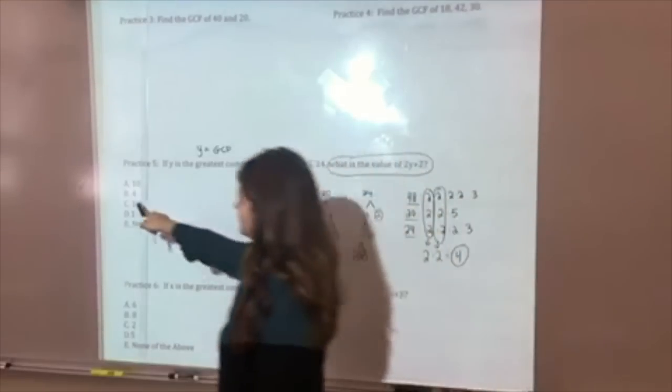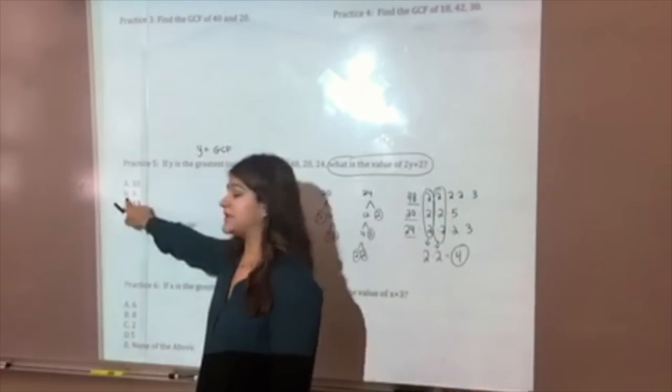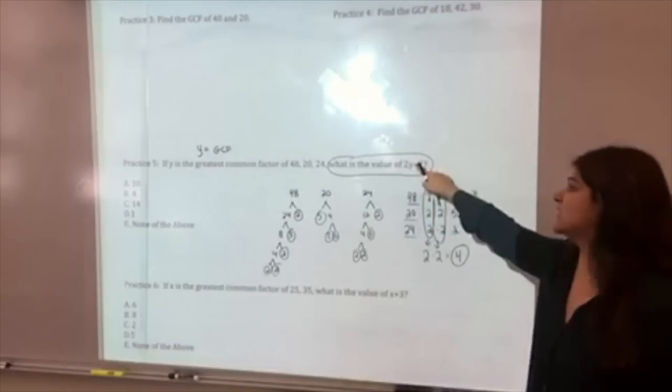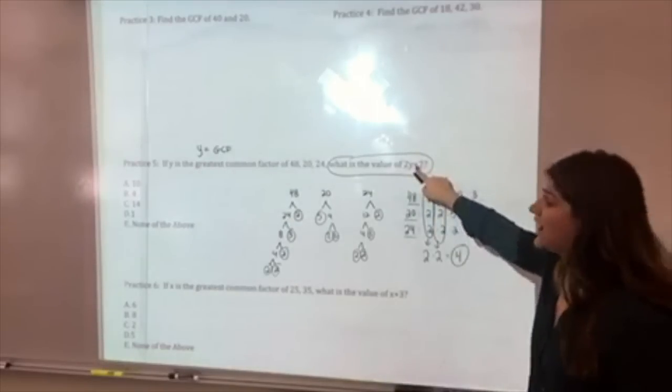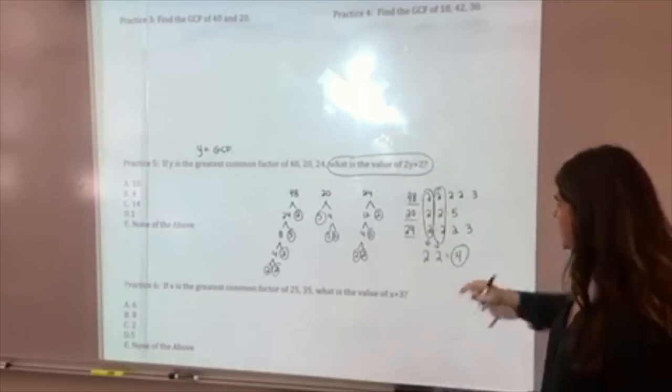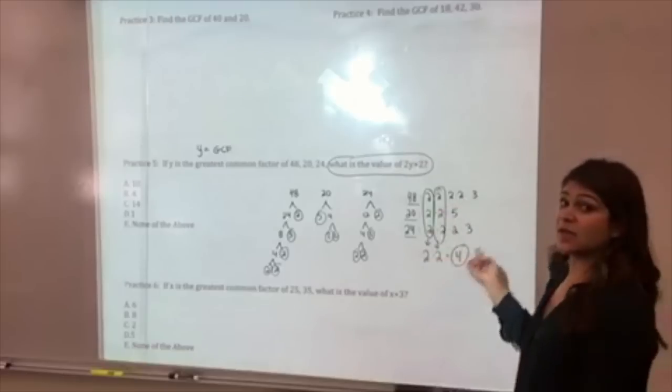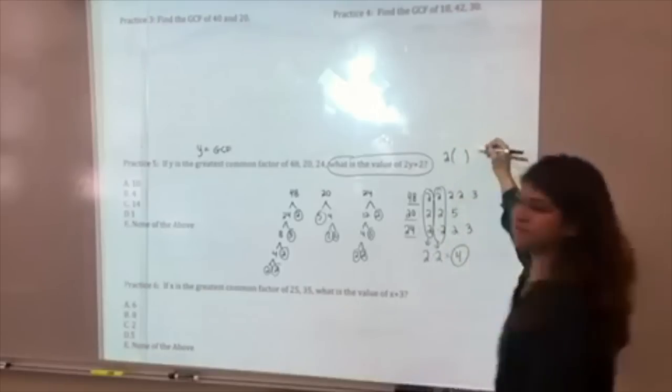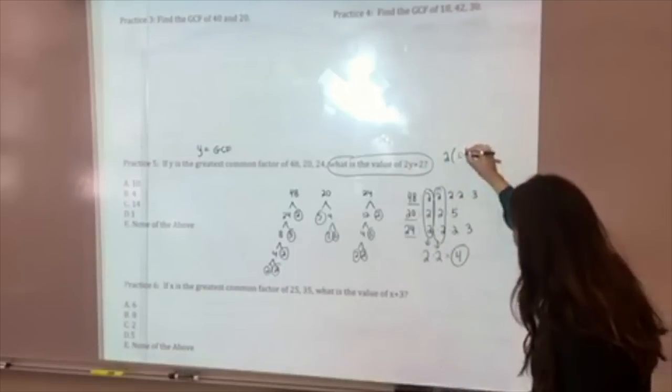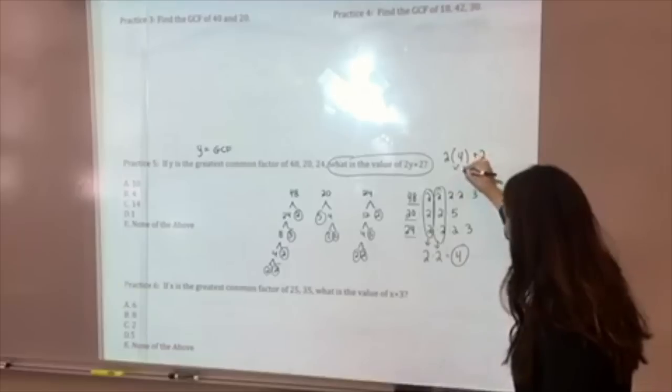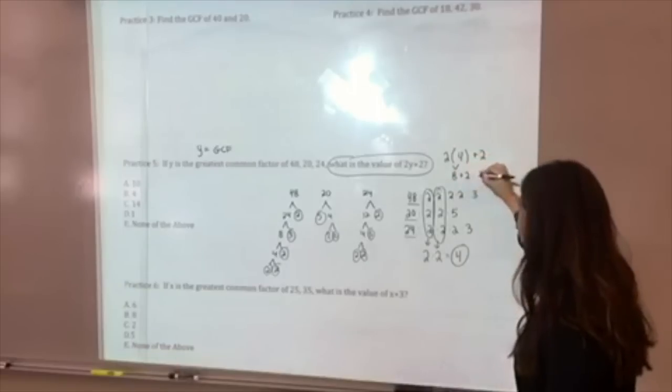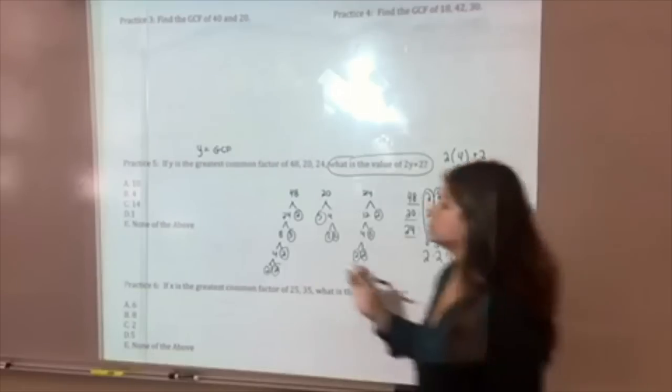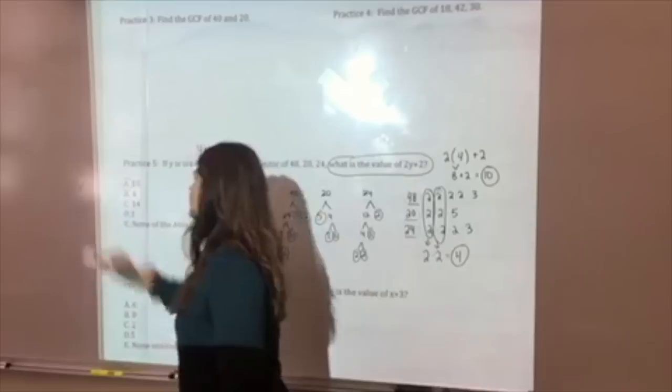Notice how I'm not going to select my answer choice B for 4, because it never asked us for what is the greatest common factor. It said what is 2 times the greatest common factor plus 2. So we're going to go ahead and substitute that back into our problem. 2 times, when we're substituting we use parentheses, 4 plus 2. That would give us 8 plus 2. So 10 would be our final answer, which is letter choice A. Again, this is the work that you're showing. Anything less than this will be considered incomplete, and you're not getting the practice that you should be with these practice problems.